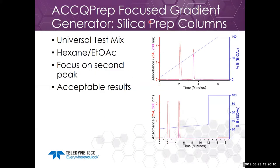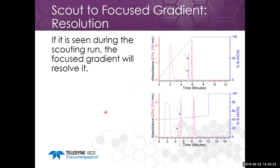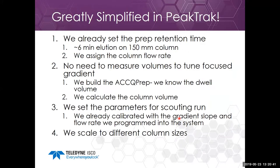Interestingly, it works very well for silica gel too. We ran our universal test mix in hexane/ethyl acetate, focused on the second peak, and it came out within the four-to-eight-minute window — so we have acceptable results. I get some questions about resolution: if you see a small shoulder on the side of a peak during the scouting run, the focused gradient will resolve it. This process is greatly simplified in PeakTrack.